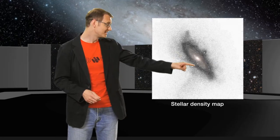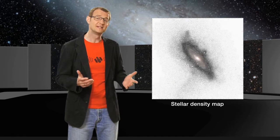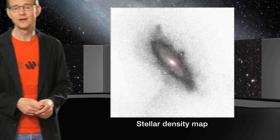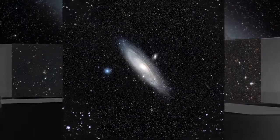This giant stellar stream is noticeably denser than the rest of the halo. This swathe of stars was left behind by a dwarf galaxy that was swallowed by Andromeda.